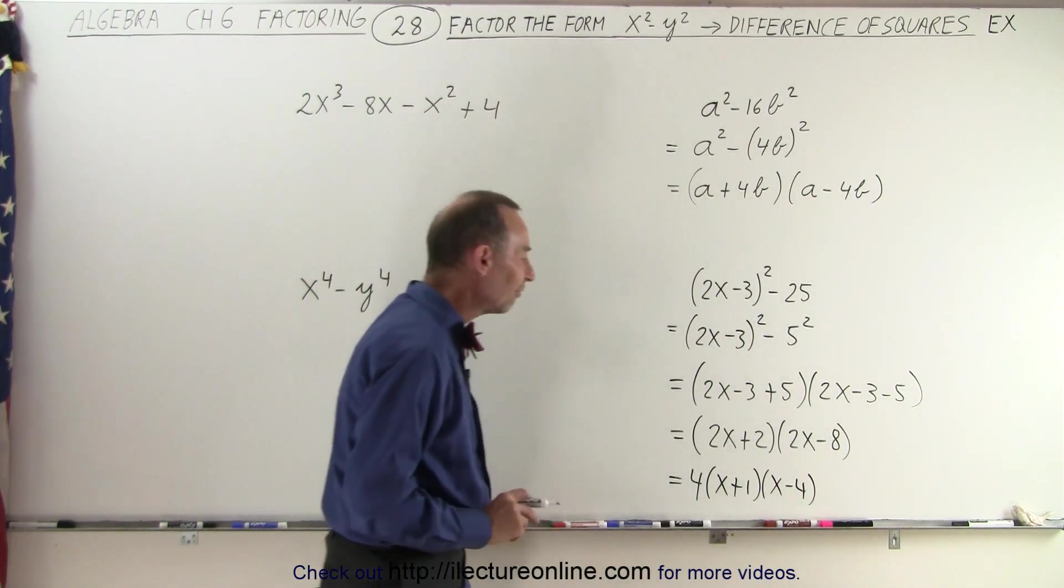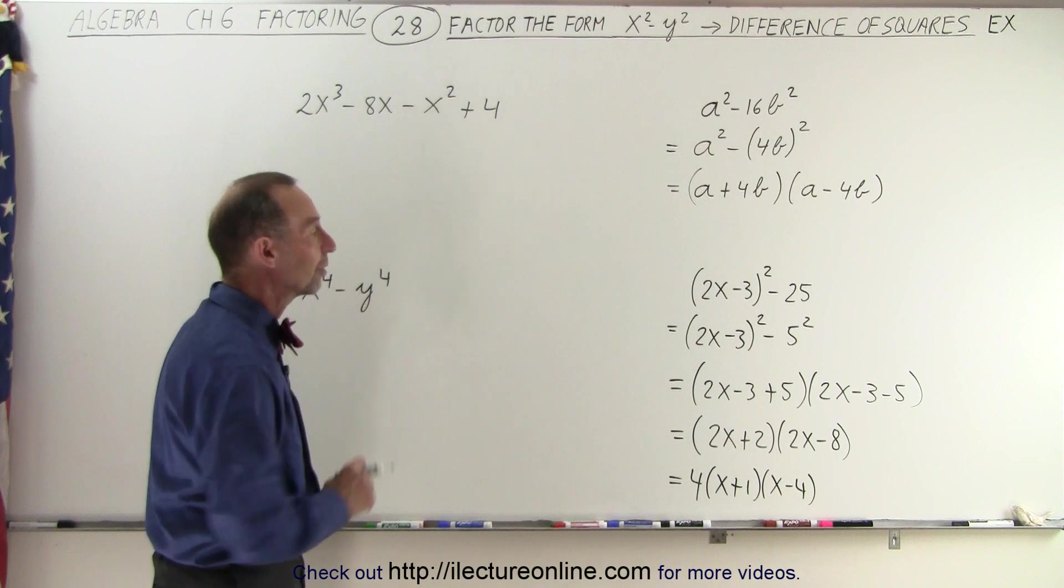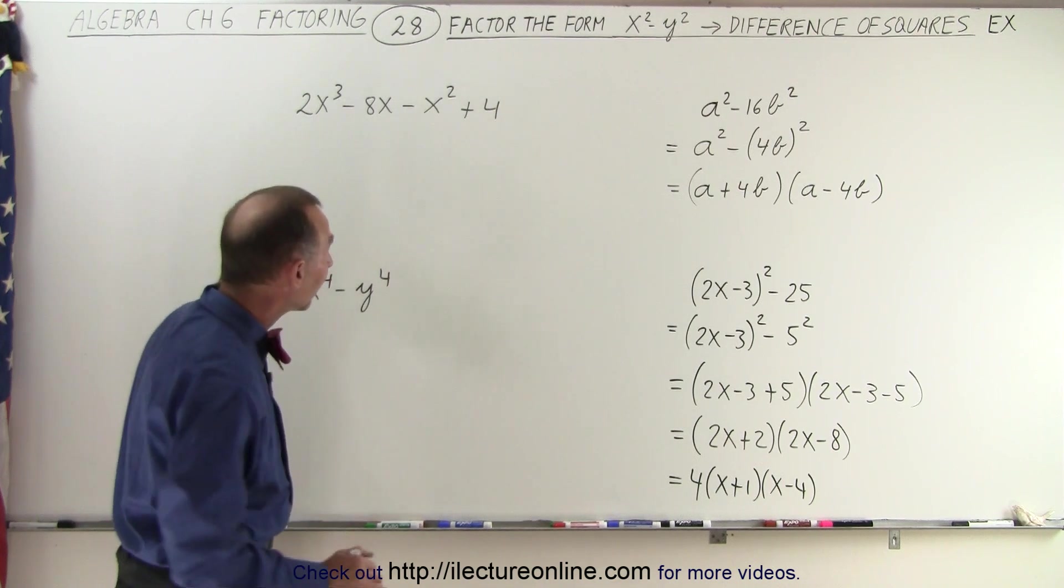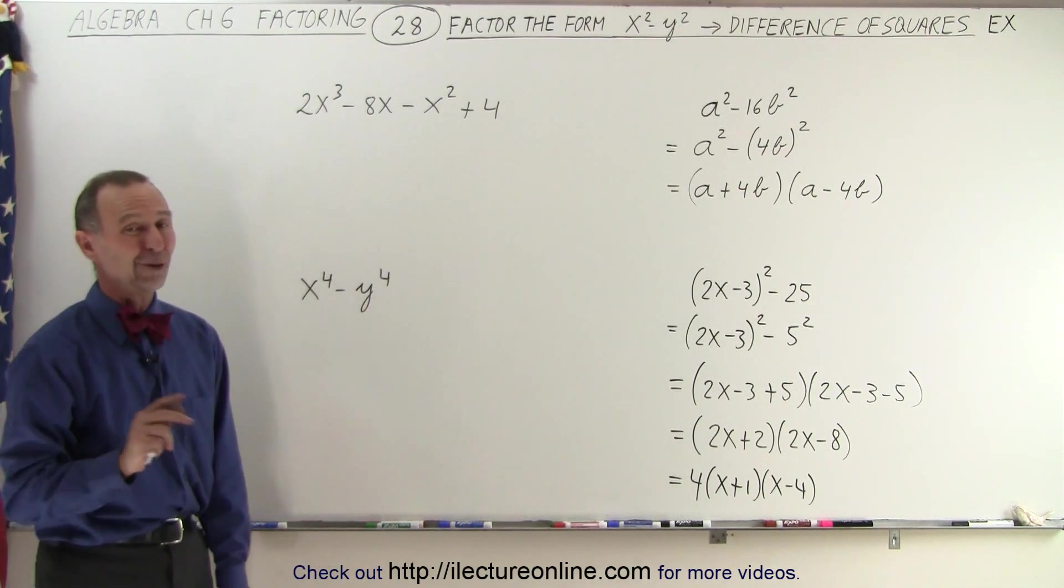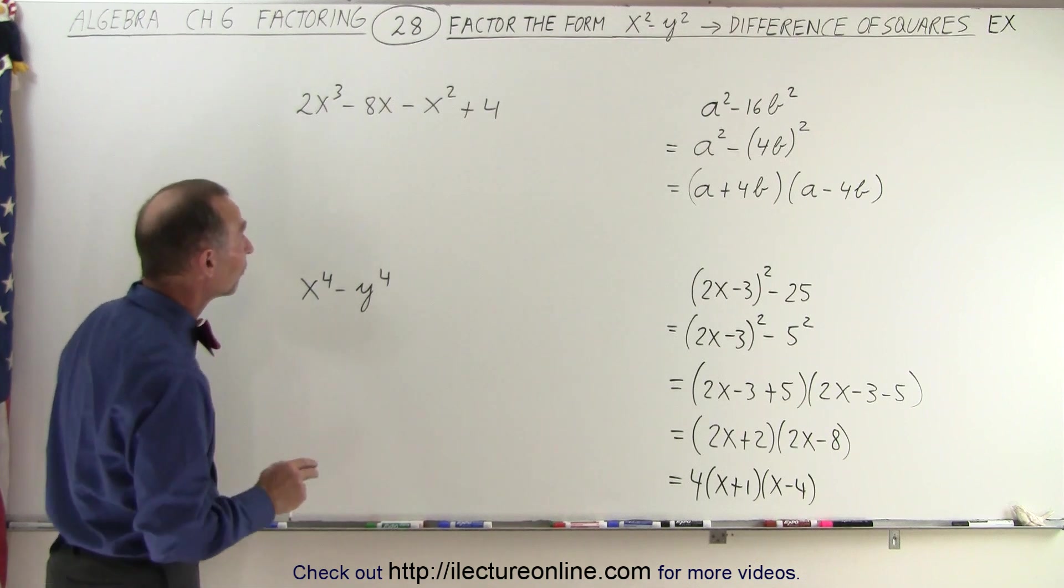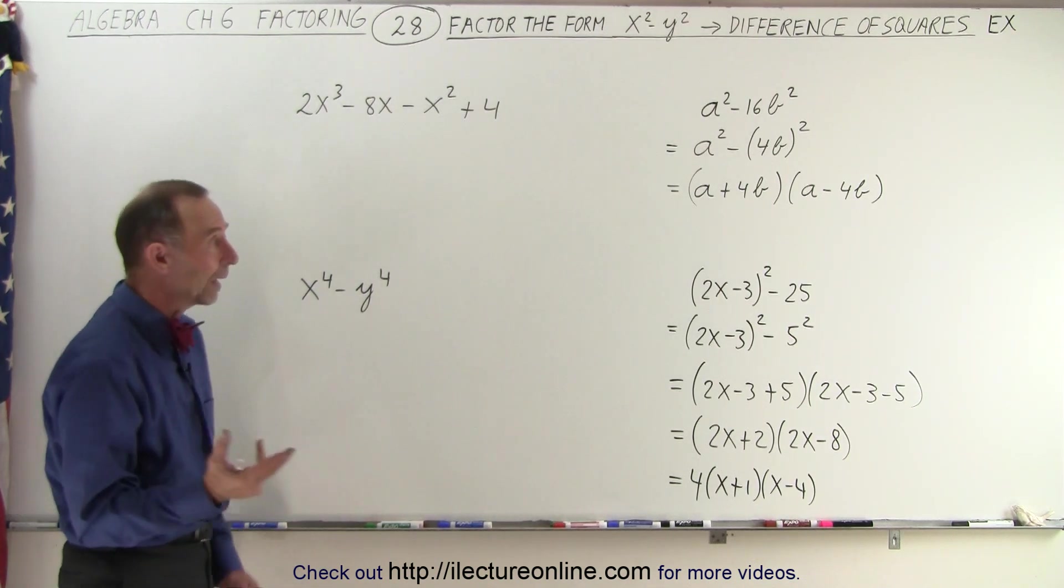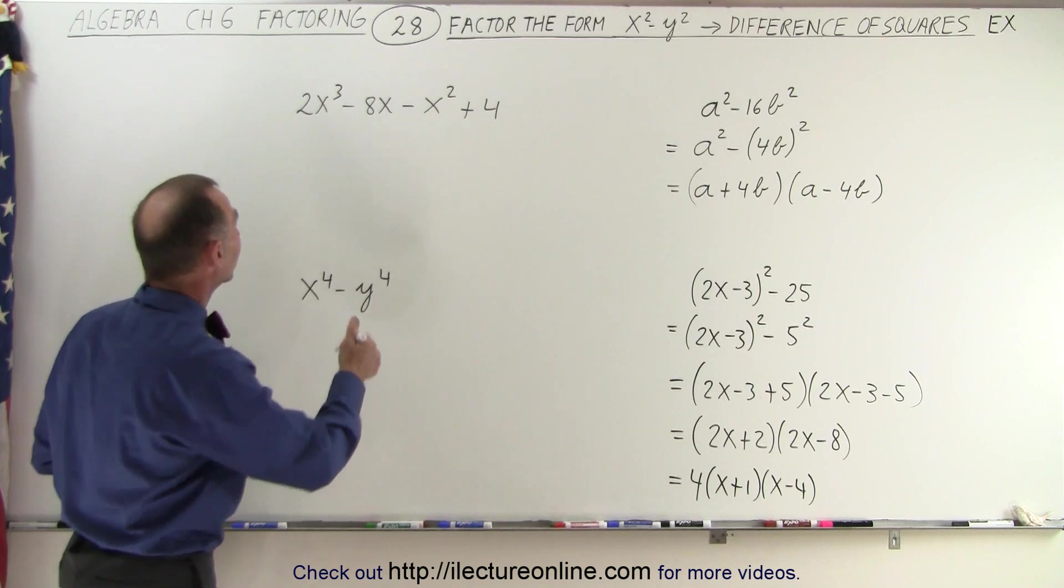And that would be then the final solution, the final factored form of our original problem. Alright, now let's take a look over here. By no means does that look like the difference of two squares. However, if we're going to try to factor that first by grouping, let's group this together and let's group these two together.